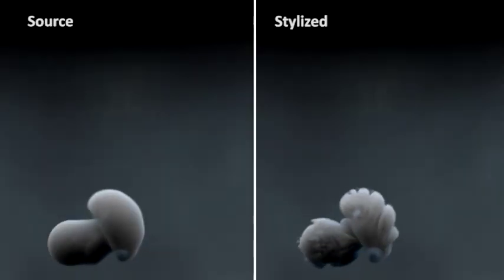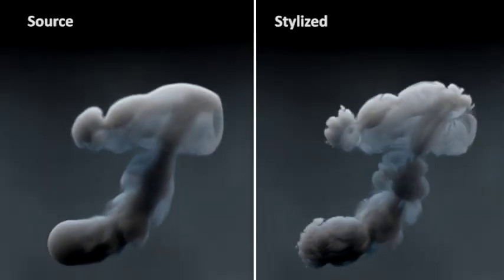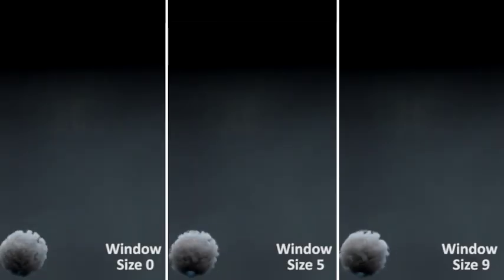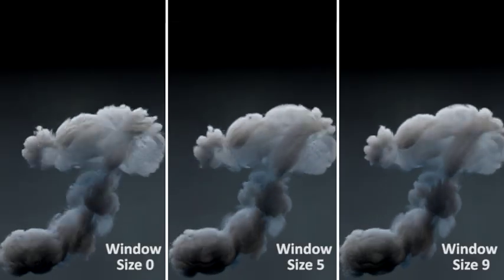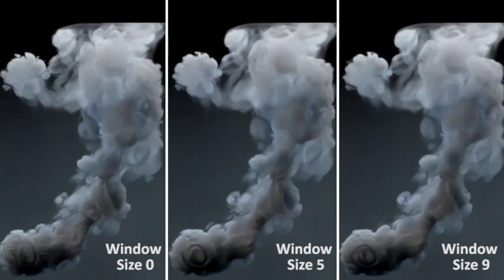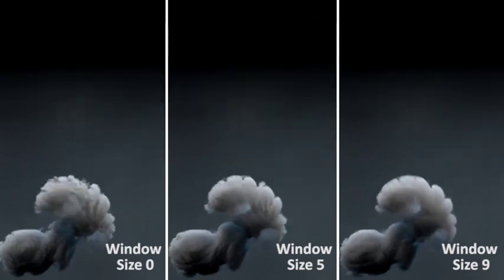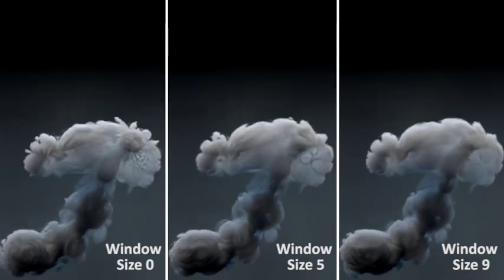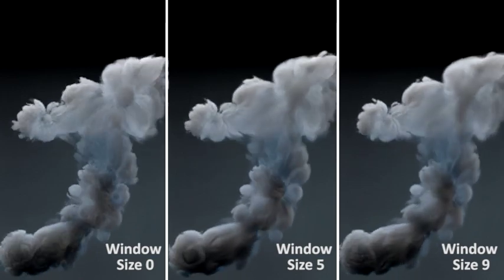We also evaluated how the time coherency window may affect the result of the stylization. On the left video, no time coherency is enforced and heavy flickering of features occurs. On the middle and right sequences, we used a time coherency window of 5 and 9 frames respectively.